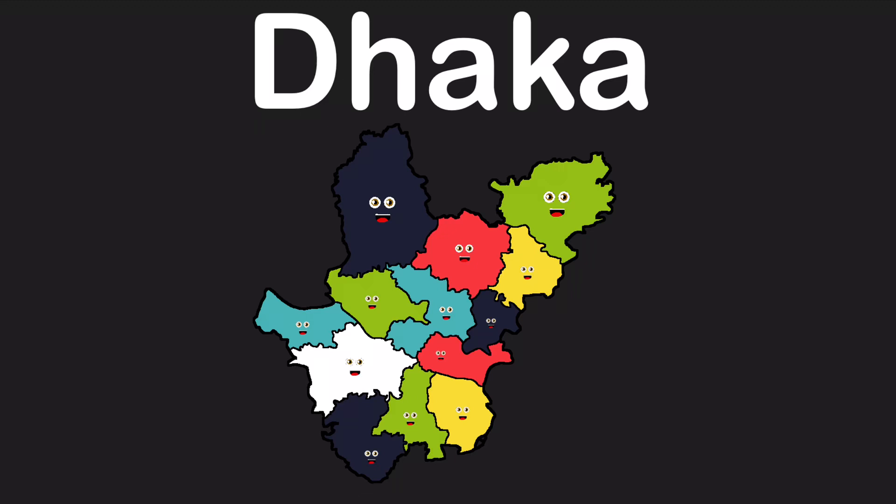Dhaka Division — Dhaka Division in Bangladesh is made up of 13 districts. We hold the capital of Bangladesh. Now let's get learning. I also touch Chittagong. My name is Narsingdi. My capital's the same, as you can see.